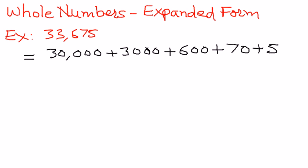What we have done here is we have taken the place value chart and then written it out in its format. The 5 is in the 1's place, the 7 is in the 10's place, the 6 is in the 100's place, the 3 is in the 1,000's place, and the second 3 is in the 10,000's place.